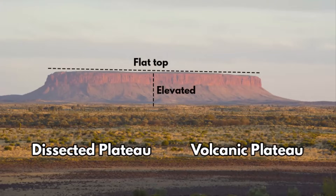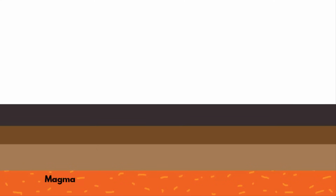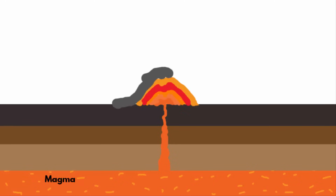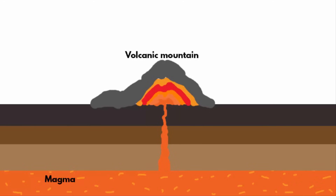The second type is volcanic plateaus. They are formed by numerous small volcanic eruptions that slowly build up over time, forming a plateau. We already know that a plateau is an elevated piece of land. When lava continuously flows out of a volcano, with time, lava gets accumulated in the form of layers, and that is another way plateaus are formed.